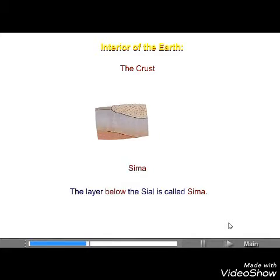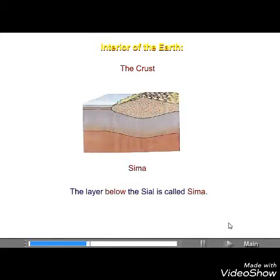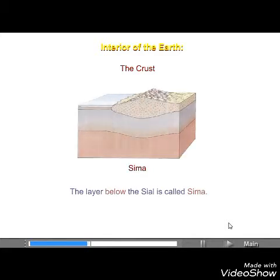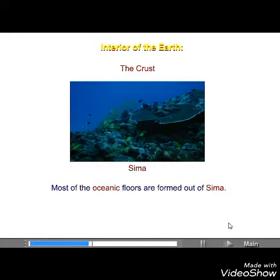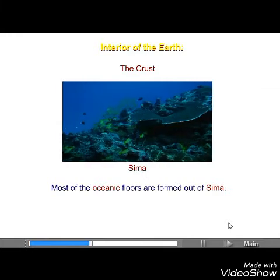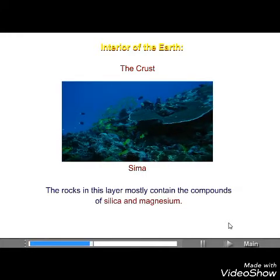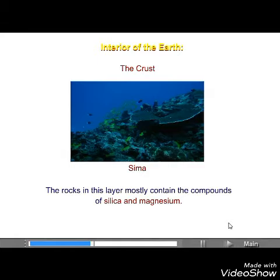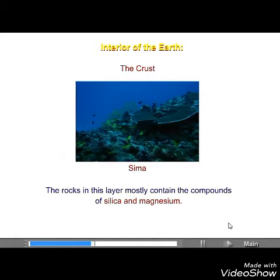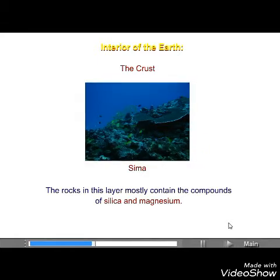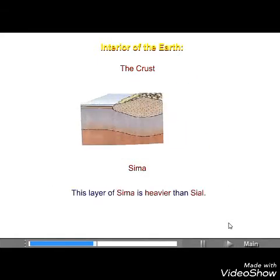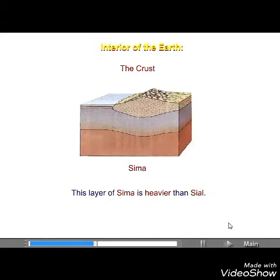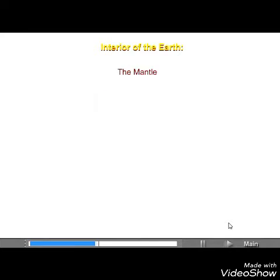Saima. Most of the oceanic floors are formed out of saima. The rocks in this layer mostly contain the compounds of silica and magnesium. This layer of saima is heavier than sial.